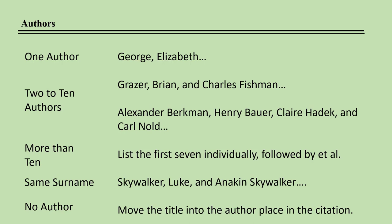When there is more than one author, only the first author's name is reversed, and the item is filed alphabetically by the first author's surname. The Oxford comma is used before the word AND, which precedes the last author listed. The Oxford comma is a comma used after the penultimate item in a list of three or more items, before the word AND or the word OR.